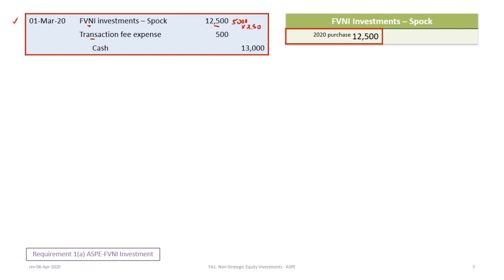There's a transaction fee, so we debit Transaction Fee Expense for $500 and credit Cash for $13,000. In the T-account, we insert a debit of $12,500.